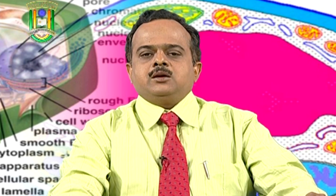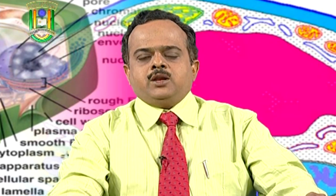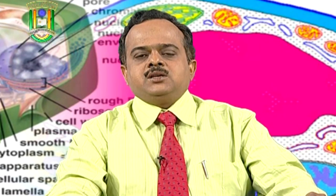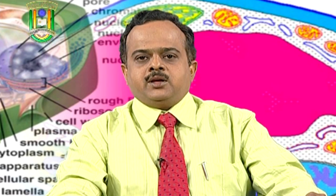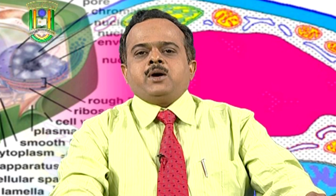چلیے ہم آپ کو سیل تھیوری کے بارے میں تفصیل سے بتائیں گے۔ سیل تھیوری کیا ہے؟ تمام زندہ عضوییں چھوٹی اکائیوں سے بنے ہوتے ہیں جن کو خلیہ کہتے ہیں۔ خلیہ ایک جینیاتی، فعلیاتی اور تبارسی اکائی ہوتا ہے، اسی کو سیل تھیوری کہتے ہیں۔ خلوی نظریہ کو سلائیڈن اور شون نے دریافت کیا۔ روڈولف ورچو نے دریافت کیا کہ نئے خلیے پہلے سے موجود خلیوں سے نمودار ہوتے ہیں، اس کو اومنس سیلولا ای سیلولا بھی کہا جاتا ہے، یعنی خلیے تمام عضویوں کی تبارسی اکائی ہیں۔